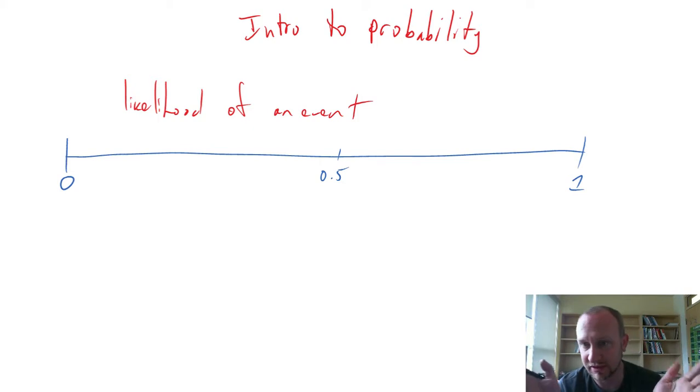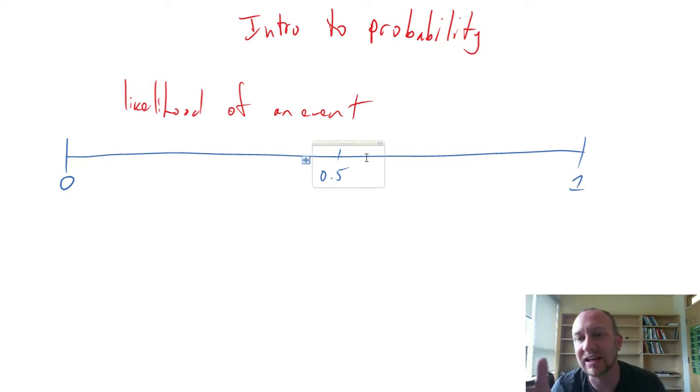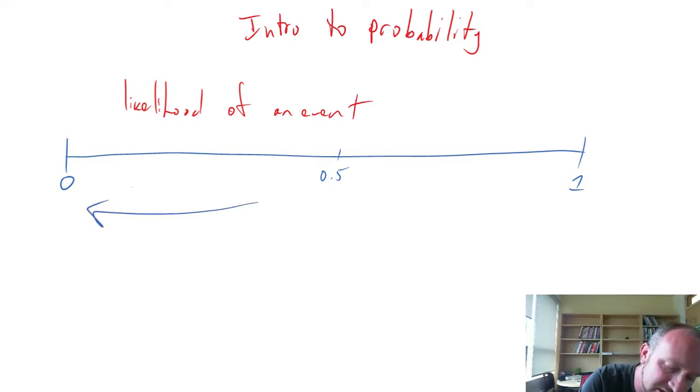0.5, of course, is in the middle. A probability of 0.5 means it's equally likely and unlikely to occur. The chances of something happening and not happening are the same. As we approach 0, this is less likely to occur. As we approach 1, this is more likely to occur.